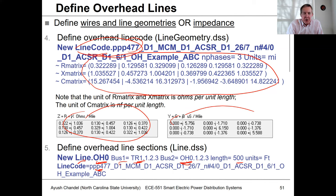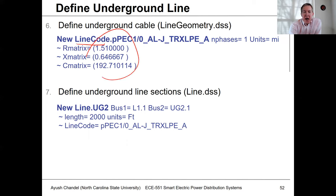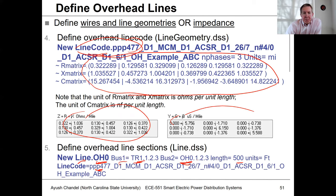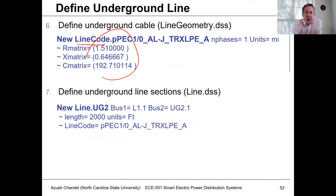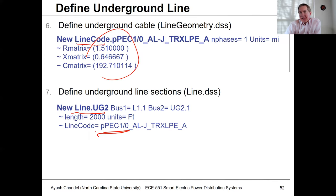You also have conductor information available, which you need for line ampacities to set percent capacity. For cables, you define different line codes with the matrix information, then define a new cable referencing those line codes — this is all automated in the export. If you want to get ampacity for cables, you'd also need to put in some conductor information.